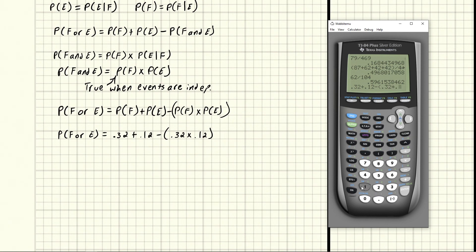So we get 0.32, turn it on, 0.32 plus 0.12 minus 0.32 times 0.12. We don't really need the parentheses—order of operations would take care of it, but it's a good habit. So we hit enter and we get 0.4061. So this is equal to 0.4016, probability of F or E.